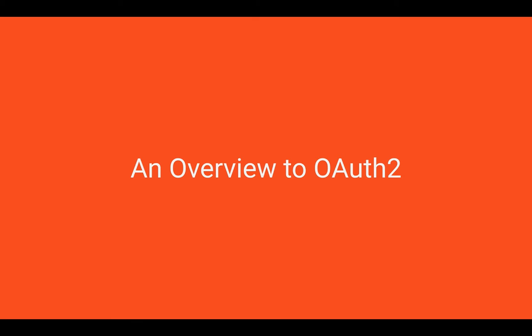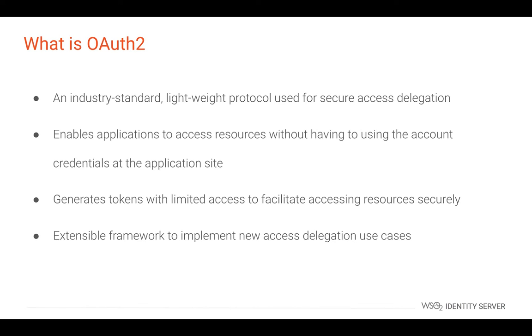Now that you know the importance of access delegation, let us explore OAuth 2, the de facto standard for access delegation. OAuth 2 is the industry standard lightweight protocol used for secure access delegation. It enables applications to access resources without having to use the end user account credentials at the application. This mechanism generates tokens with limited access to facilitate accessing resources securely. OAuth 2 is not just a standard — it's an extensible framework to implement new access delegation use cases.